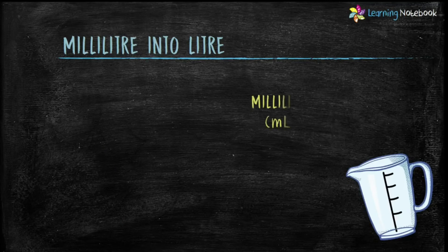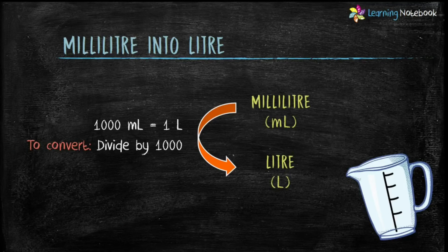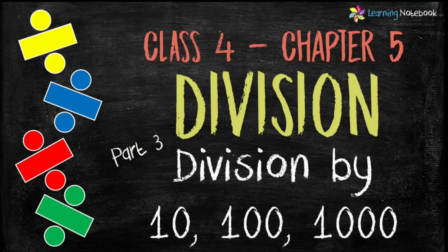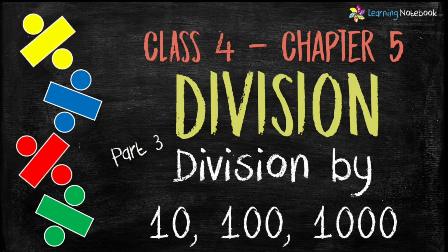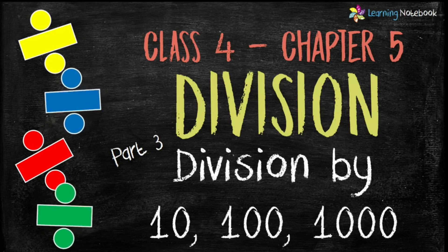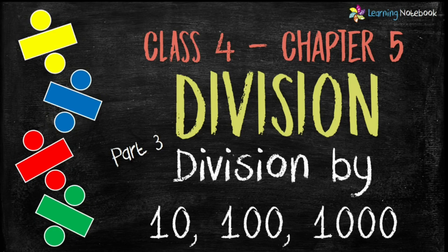Now let's do conversion of milliliter into liters. One thousand milliliter equals one liter, so to convert milliliter into liter, divide by one thousand. It is important that you know how to divide by 1000 without using long division. I suggest you watch my video of Part 3 of the chapter on Division.